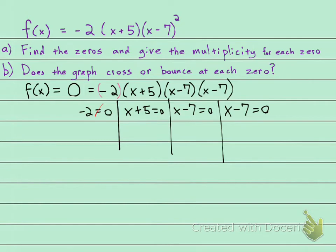For the second one, x plus 5 equals zero. Well, if I subtract 5 on both sides, I'm going to see that x equals negative 5. That's one of my zeros, negative 5.